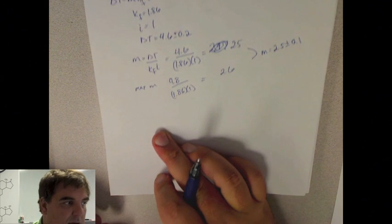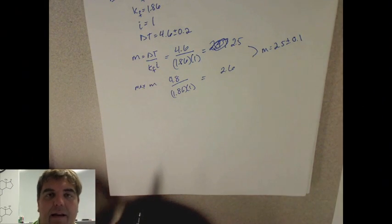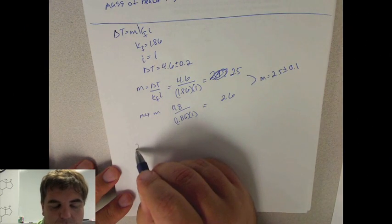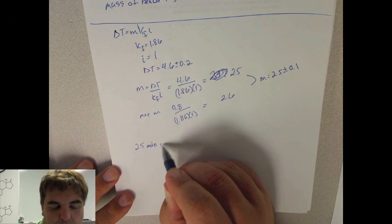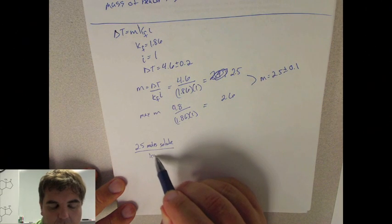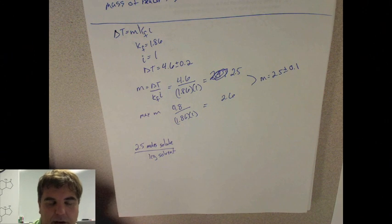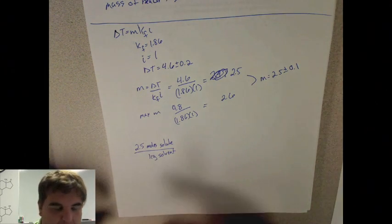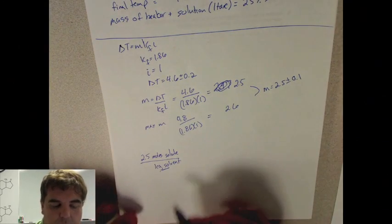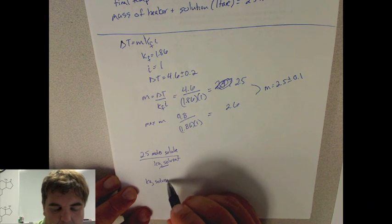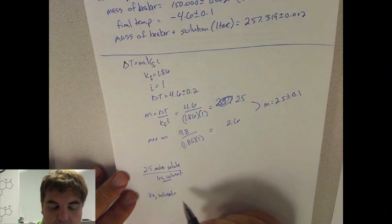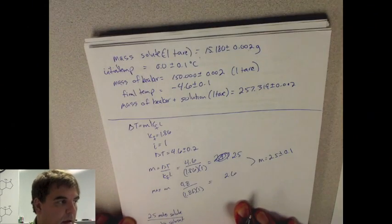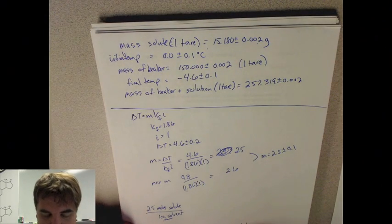So now the question is, how do we get from there to molecular mass? That is a little bit more challenging. It's going to require us to do some manipulations on the numbers. If we know that this is 2.5 moles of solute per kilogram of solvent, we need to figure out how many moles of this actually is. So we need to figure out how many kilograms of solvent we have. So kilograms of solvent then will equal the mass of the solution minus the mass of the solute in kilograms, so we'll have to divide that by 1,000.